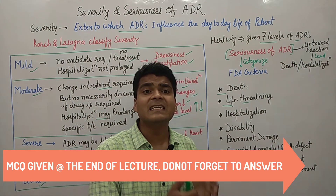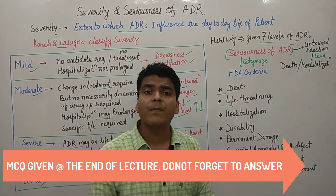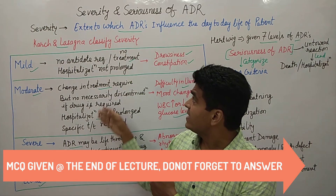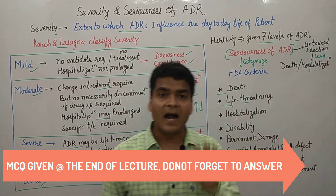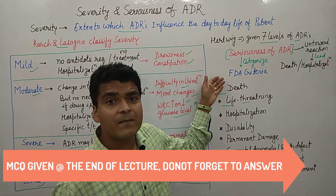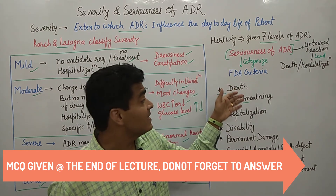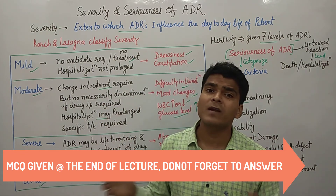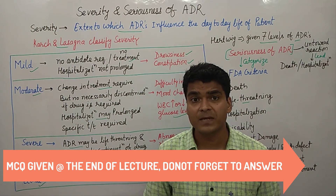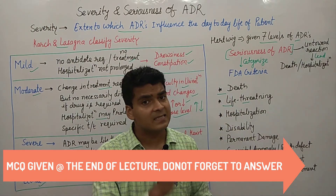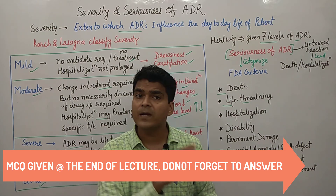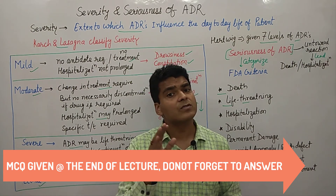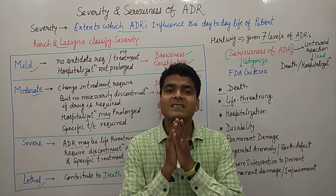If the examiner asks you to discuss severity and seriousness of ADR in a university examination, you must mention the Karch and Lassegna classification of severity, as well as the Hartwig scale. If asked about seriousness, write about the FDA criteria. Both topics may appear together as a short note. Please write your answers in the comment box and share this lecture with as many students as possible.